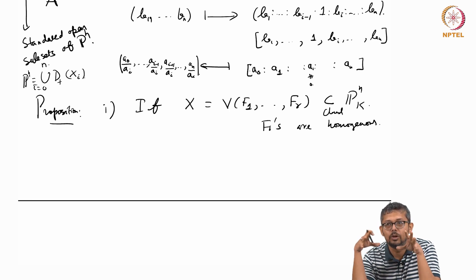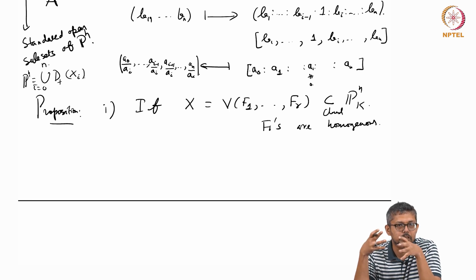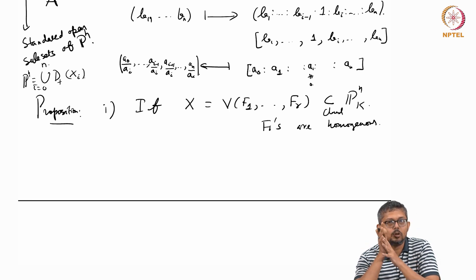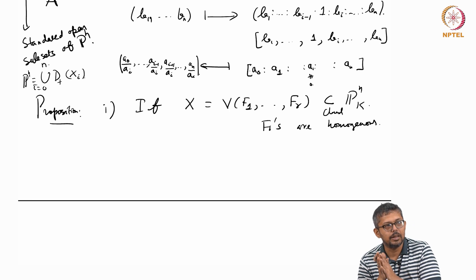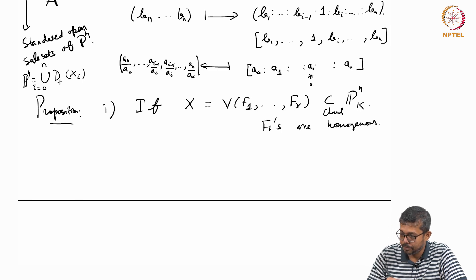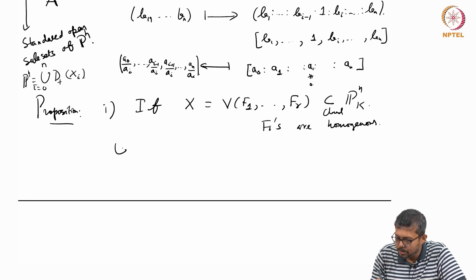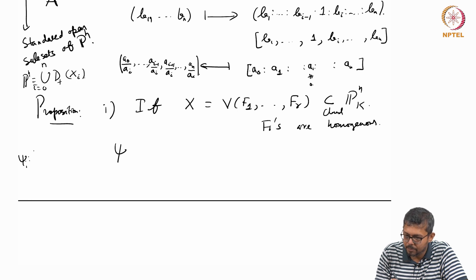D+(x_i) has a bijection with the affine space A^n, so they cover the whole projective space. What I am going to say is that this is not just set theory — as a topology also, the topology on P^n is induced from the topology of gluing of these affine spaces. This is a new idea: you can glue affine spaces and get something which is not affine, which is projective, which has a much richer structure.